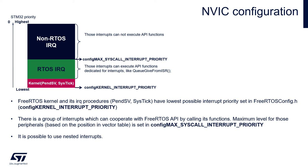To specify these three groups we need to specify two borders. The first one is configMAX_SYSCALL_INTERRUPT_PRIORITY, which sits between the first two groups, and configKERNEL_INTERRUPT_PRIORITY, which is the lowest possible priority in the interrupt system specified by the core implementation. Both are stored within the FreeRTOSConfig.h file and can be modified from the FreeRTOS config section within STM32CubeMX or STM32CubeIDE.